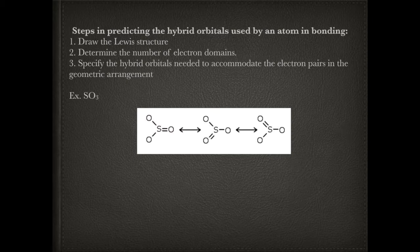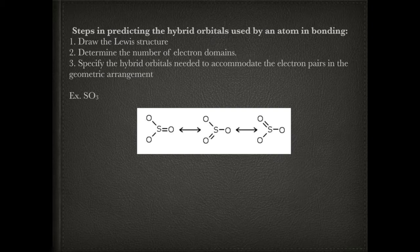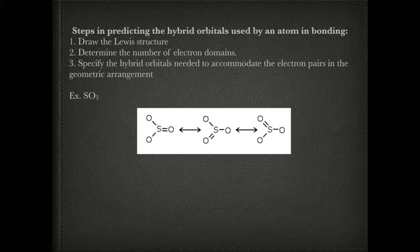Based on the number of electron domains, you specify the hybrid orbitals needed to accommodate them. Since SO3 has three electron domains, the hybrid orbital would be SP2. If you had four electron domains, like in the CH4 example, it would be SP3. If you had two electron domains, it would be SP. If you have five electron domains, you can't go above three for the P since there are only three P orbitals, so you go to the D: SP3D.